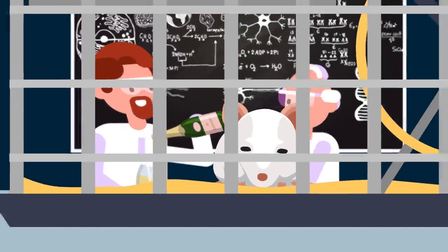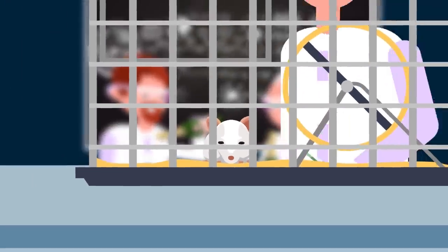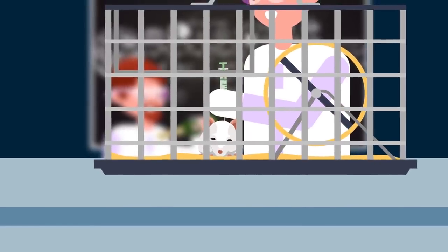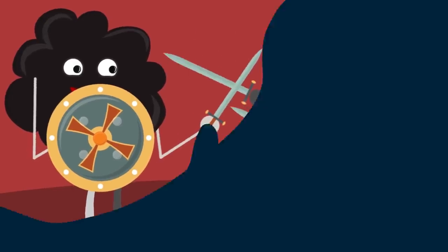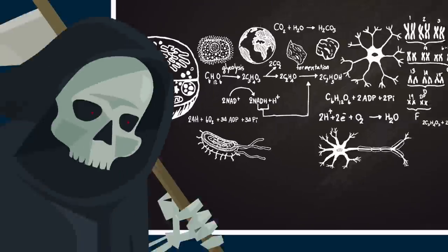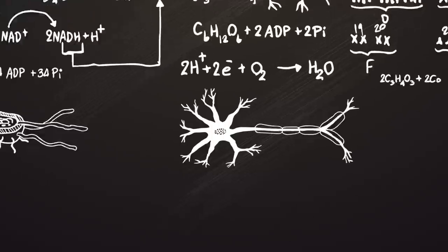And so the experiments began. The team put their theory to the test by injecting Zika straight into the brains of cancerous mice. They were encouraged to find that the experiment seemed to prove their theory. The procedure prolonged the lives of the infected mice, but the test group was rather small.